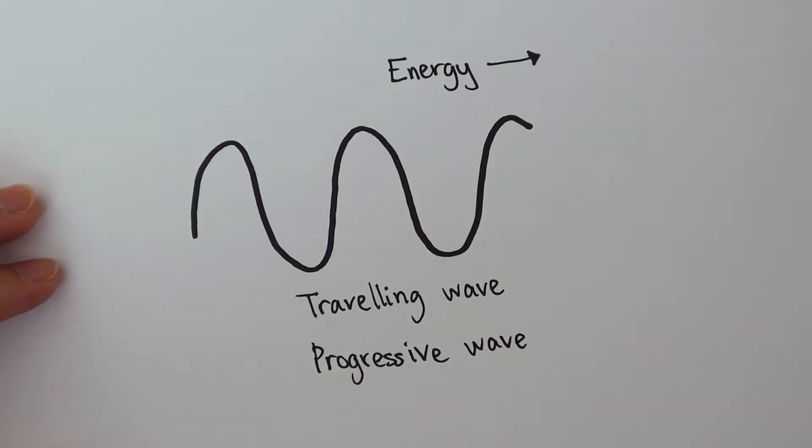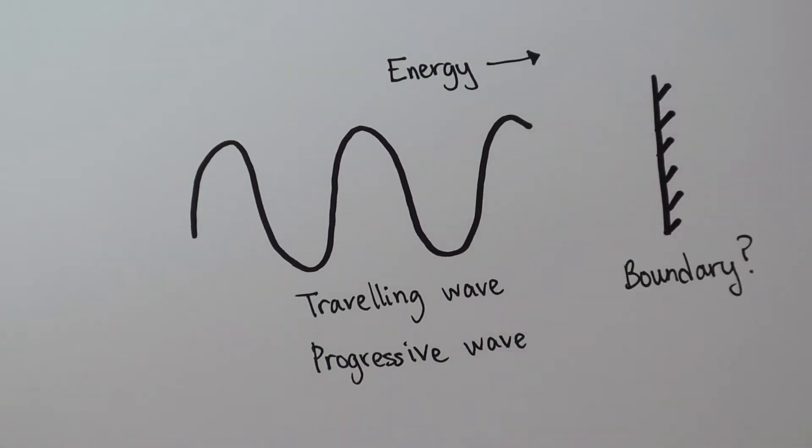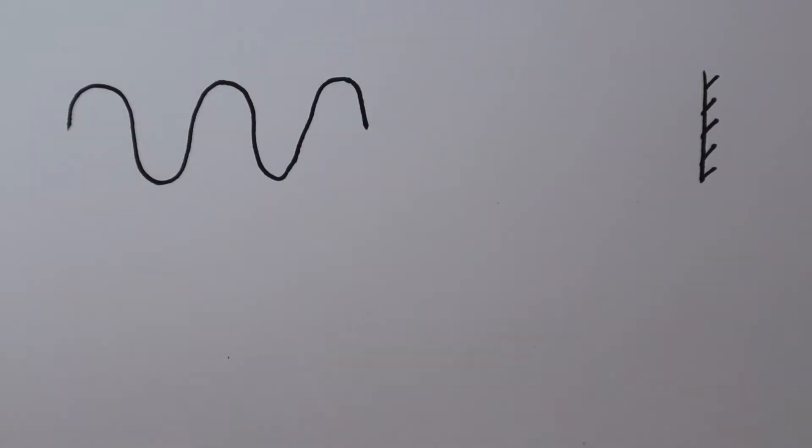What would happen to the wave if I put a boundary at this end? The wave will reflect when it meets the boundary, and upon reflection,